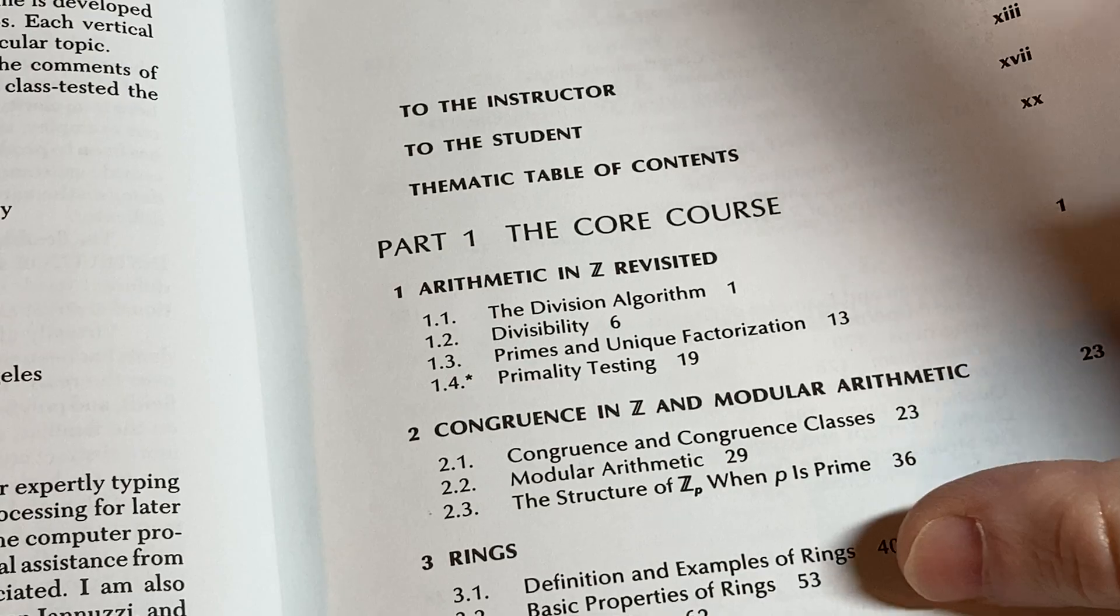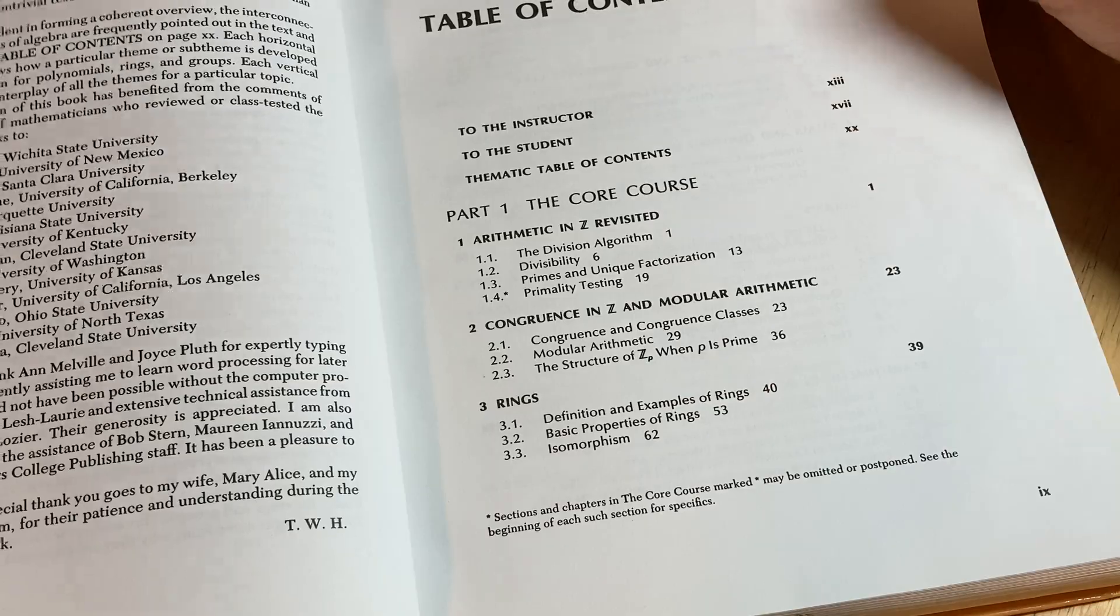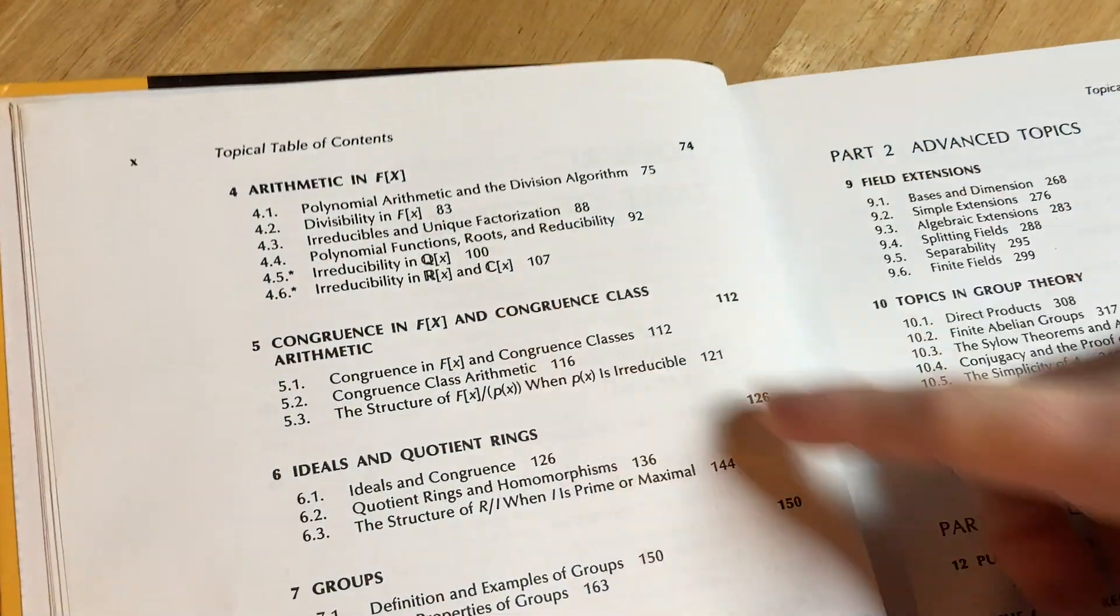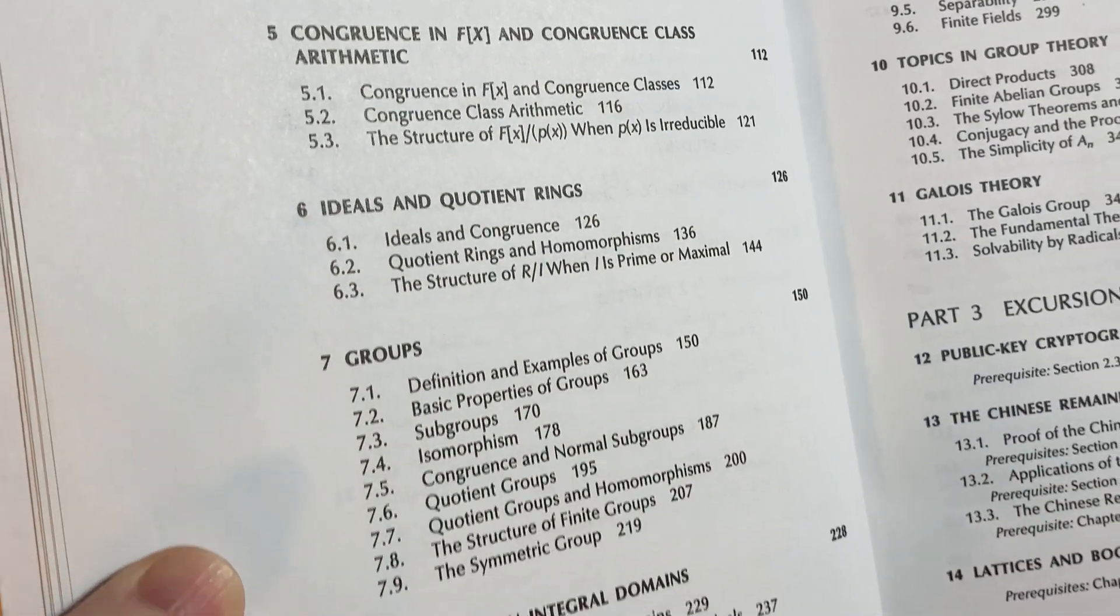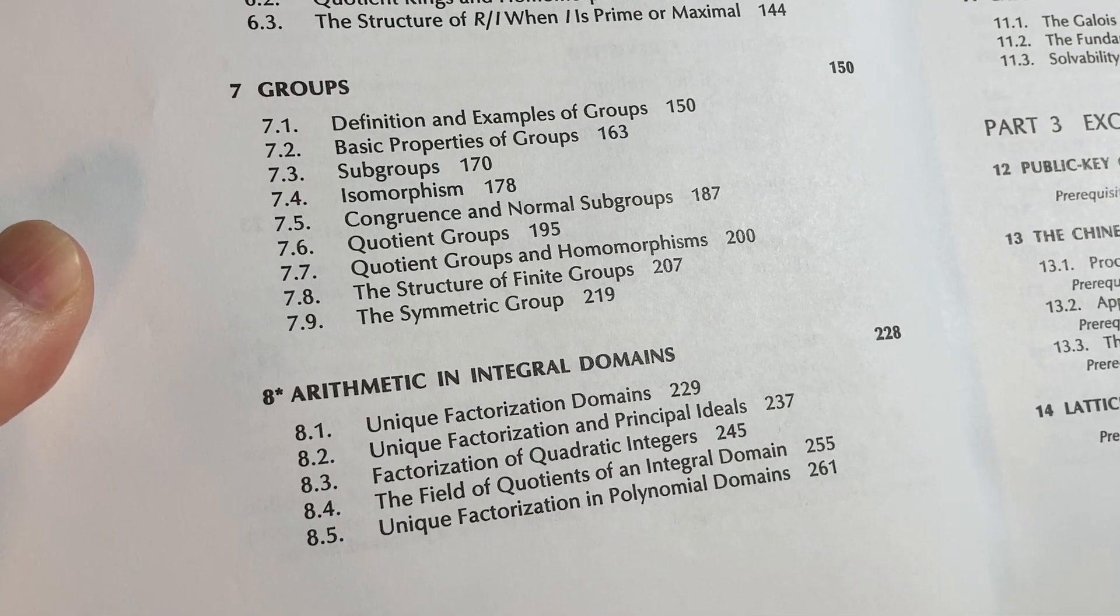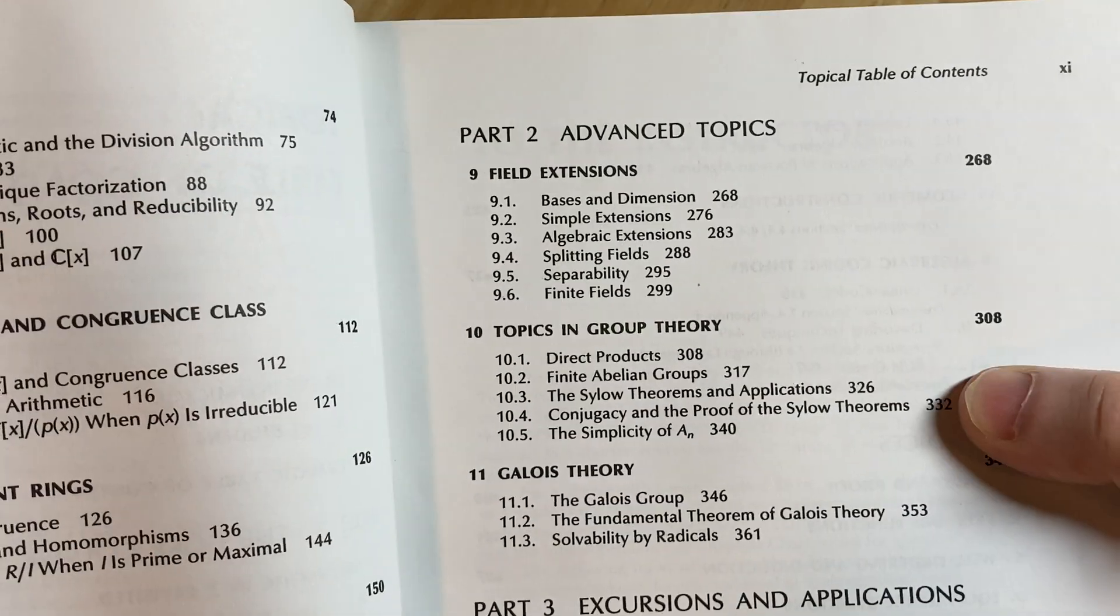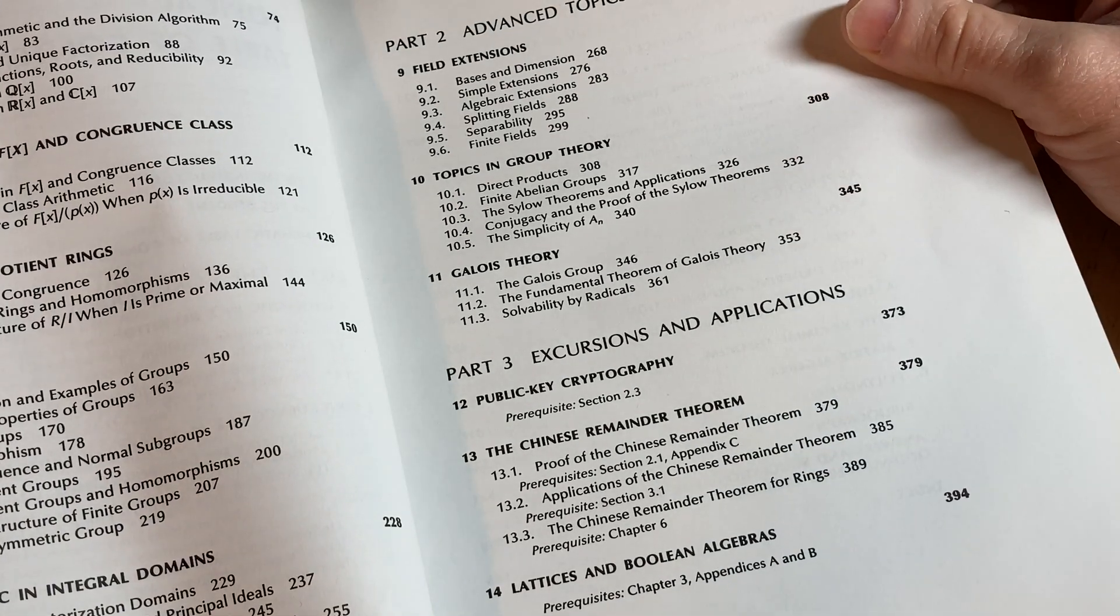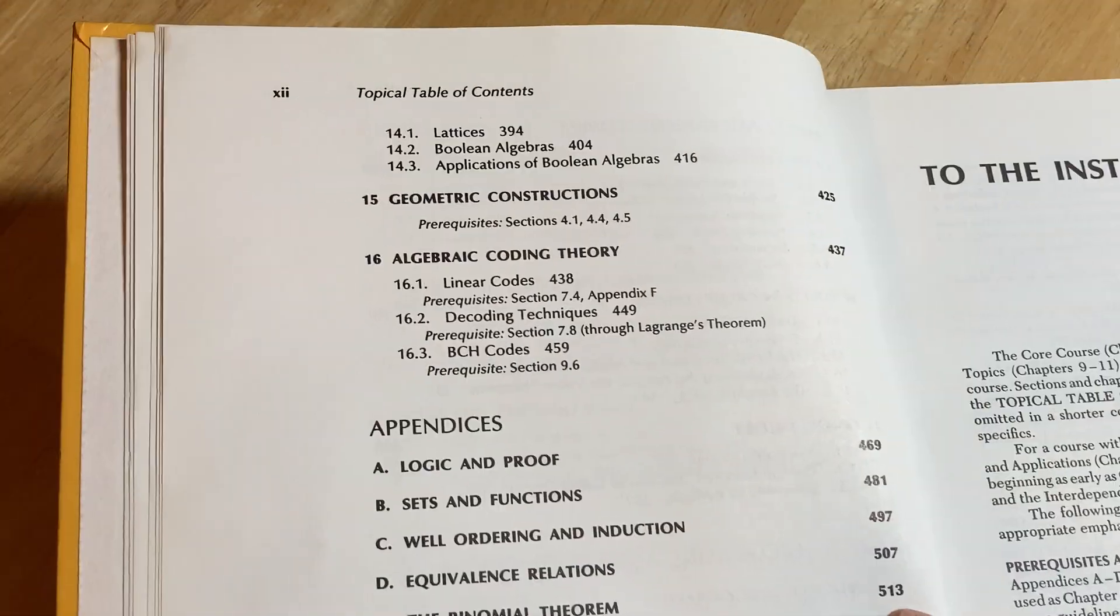Congruence, rings. It goes to rings pretty early, which is kind of cool. I mean, it's just right away, page 39. Then arithmetic and F adjoint X. Congruence, ideals, and quotient rings. Then groups. So it's rings first. That's kind of cool. That's kind of unusual for an abstract algebra book. Field extensions, topics in group theory, some Galois theory. Part 3, excursions and applications. Got some more topics there.